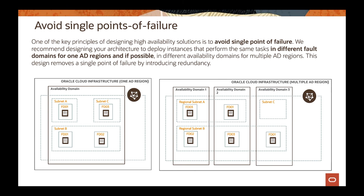This is one of the key principles of high availability: avoiding a single point of failure. As mentioned in the HA concepts, redundancy is one of the pillars, and avoiding single points of failure resonates well with that. On OCI, you can take advantage of multiple regions, multiple availability domains, and fault domains. The recommendation is that when you deploy your application, you think about those concepts and the infrastructure that's available to you.